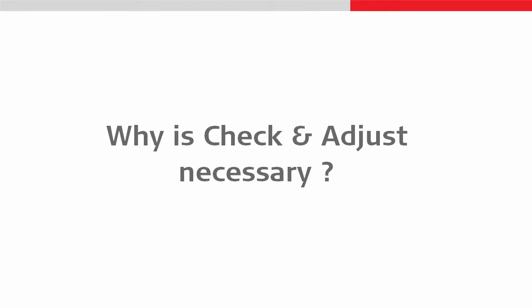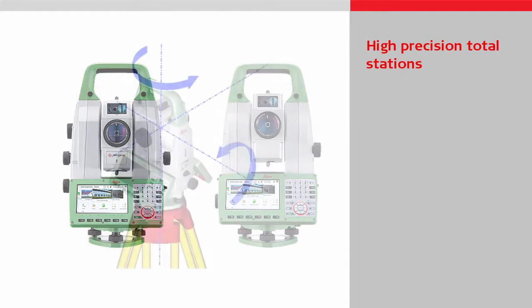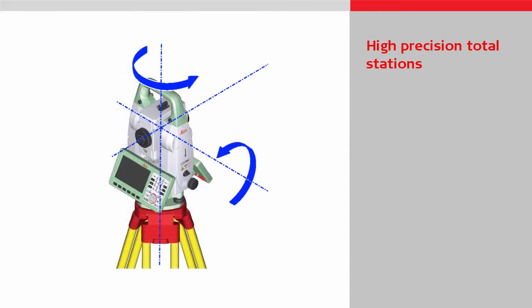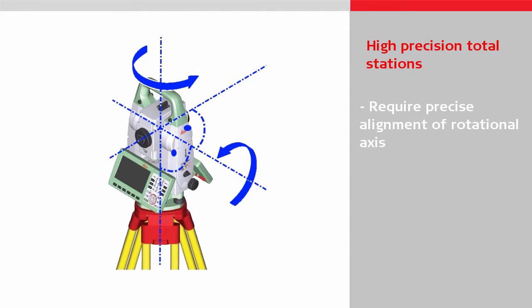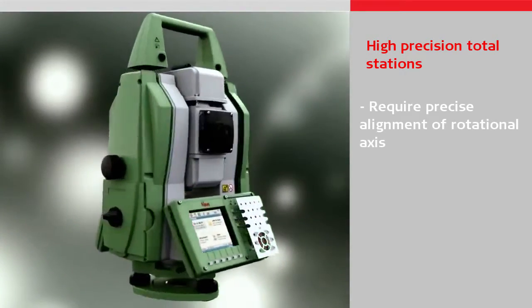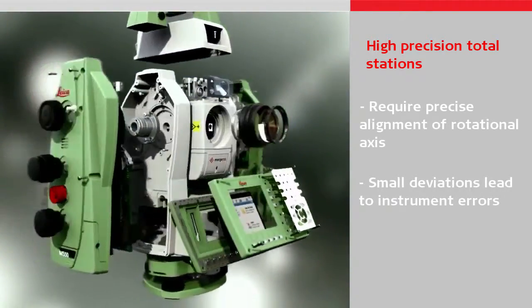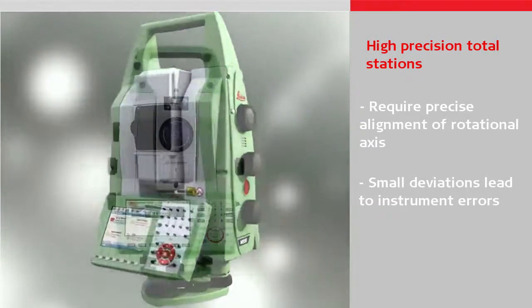Basically, the check and adjust feature is a tool to do a user calibration of the instrument. To measure with high precision, total stations have to fulfill specific requirements of the rotational axis, in particular regarding the alignment of those axes. Meeting these requirements is a tough task during manufacturing. Even the most careful and precise assembly process will result in small deviations which can lead to so-called instrument errors.